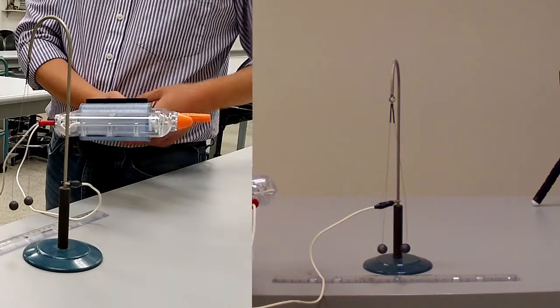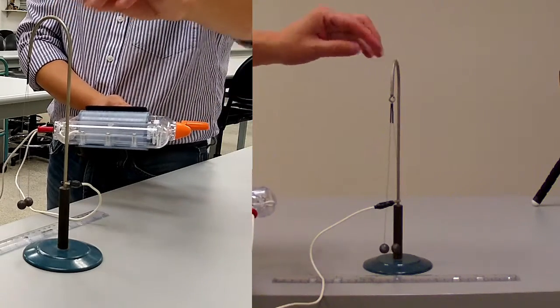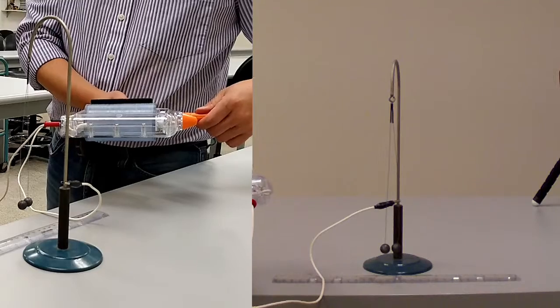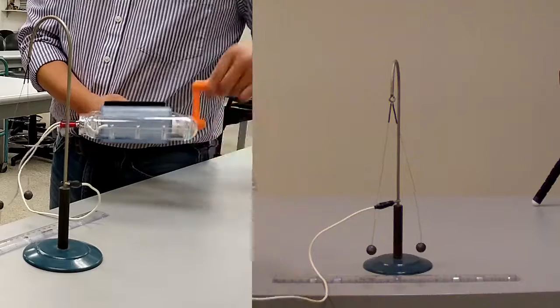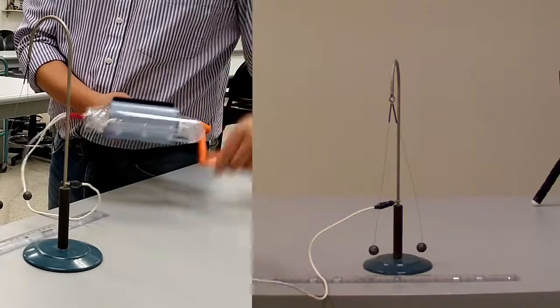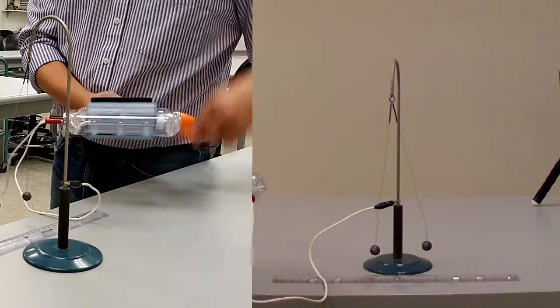Again, the charge leaks over time. This is maintaining the highest possible voltage and the amount of charge on the pith balls, considering all the sharp corners that can leak charge.